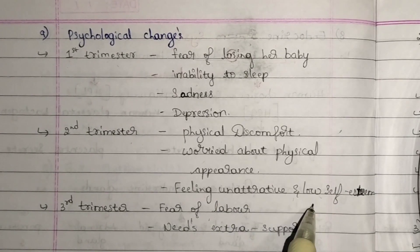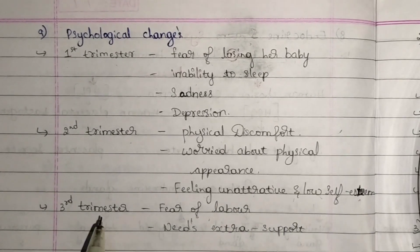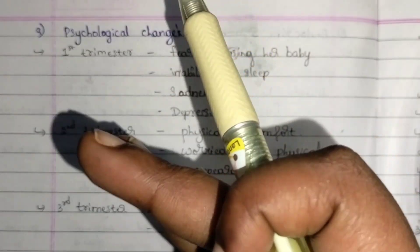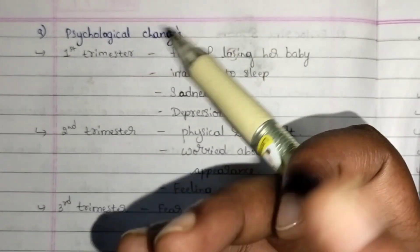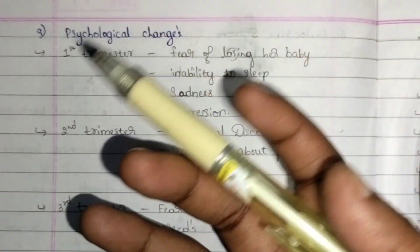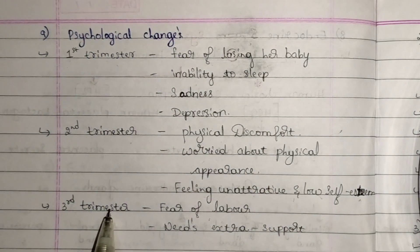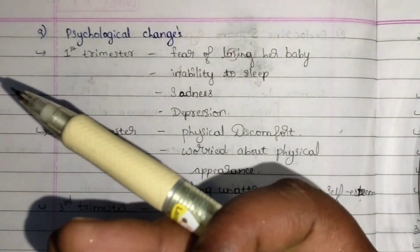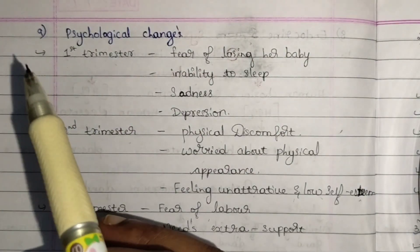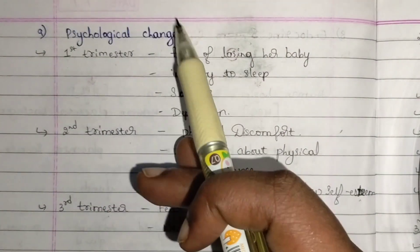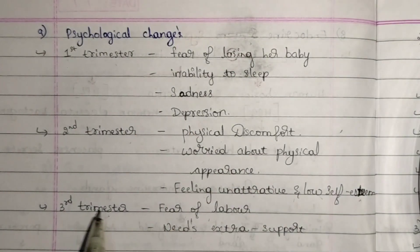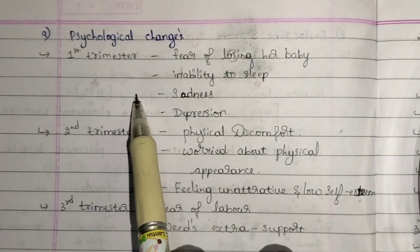In the third trimester, nearing labor, the woman will be worried about the labor, the process of labor, and the pain caused during labor. In the third trimester, they need extra psychological support — support from the family, partner, and nurses.